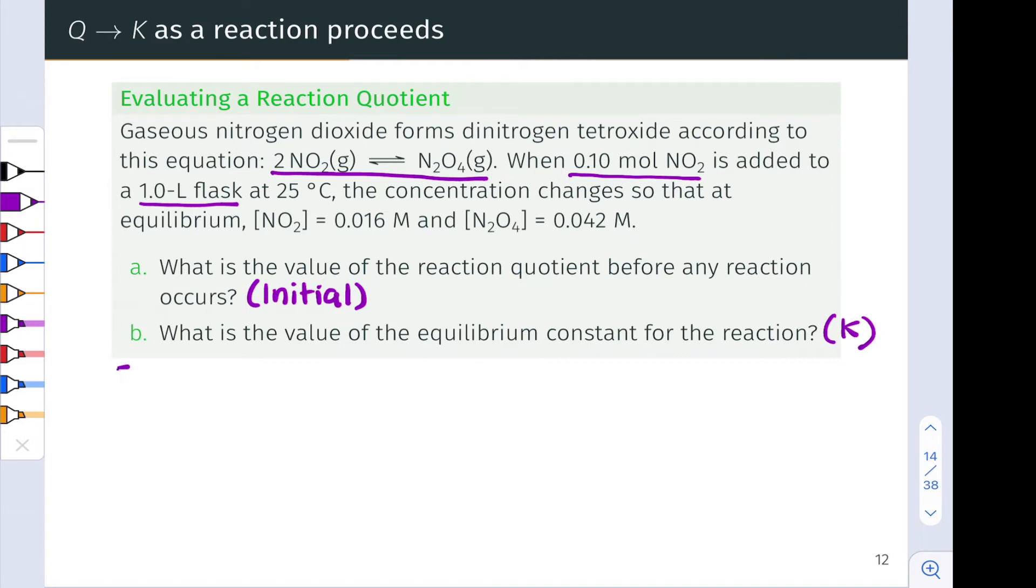What this tells us is that the initial concentration of NO2 is equal to 0.1 moles per liter, 0.10 molar. And there is no N2O4 present. We know that because N2O4 is not mentioned in the initial conditions here. So I'm going to go ahead and note that down because it's going to be important as we think about calculating the initial value of Q.